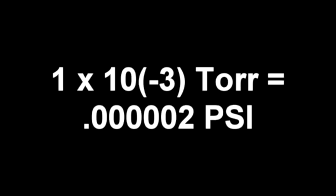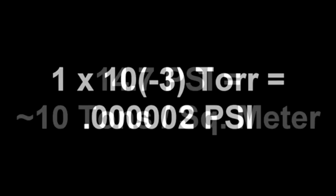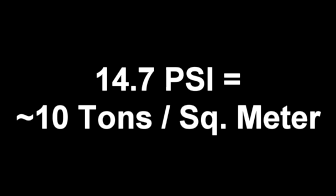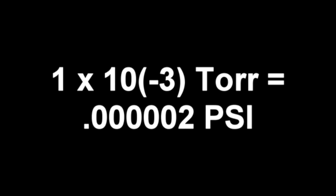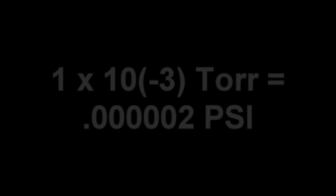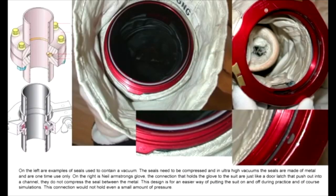La pressione all'interno della capsula, se decollata dal livello del mare, sarebbe di 10 tonnellate per metro quadrato. Come può la capsula supportare 10 tonnellate di pressione per metro quadrato all'interno delle pareti, dove cerca di uscire con appena 0,00002 psi di contropressione? In questa immagine a sinistra ci sono esempi di guarnizioni usate per supportare il vuoto; a destra c'è il guanto di Neil Armstrong — un sistema per collegare il guanto alla tuta quasi come un chiavistello.